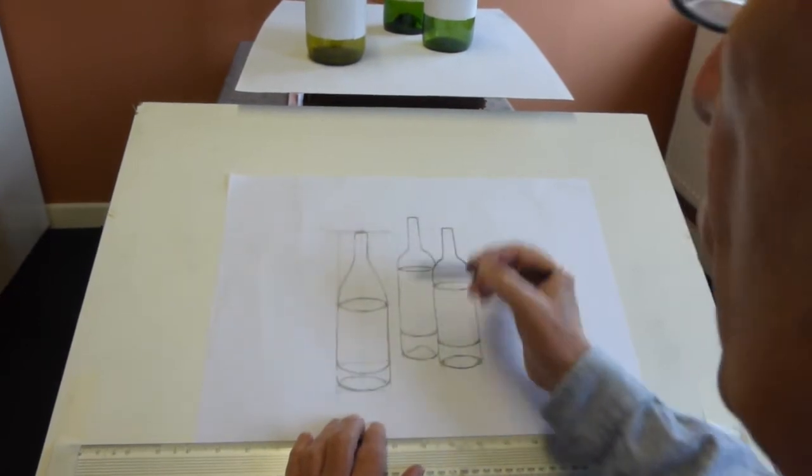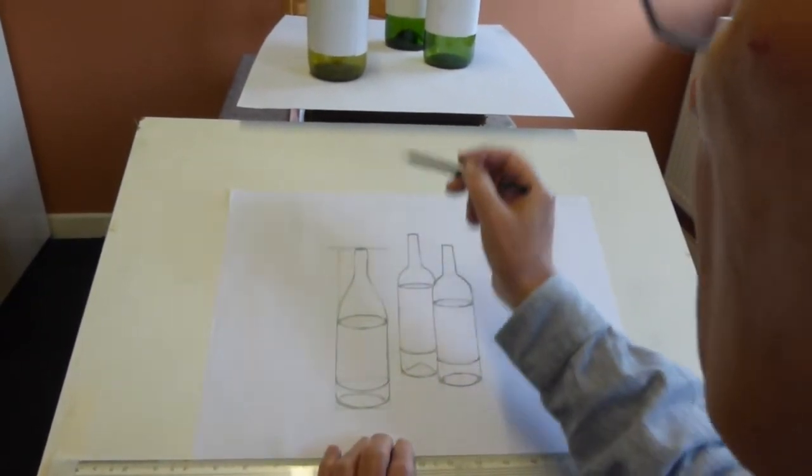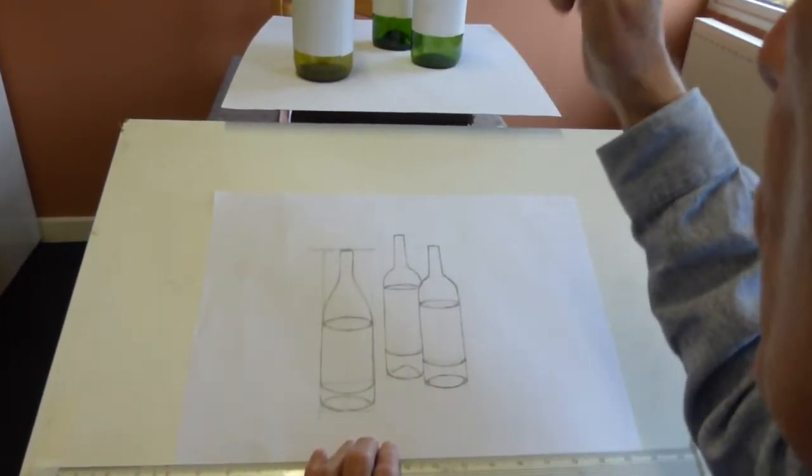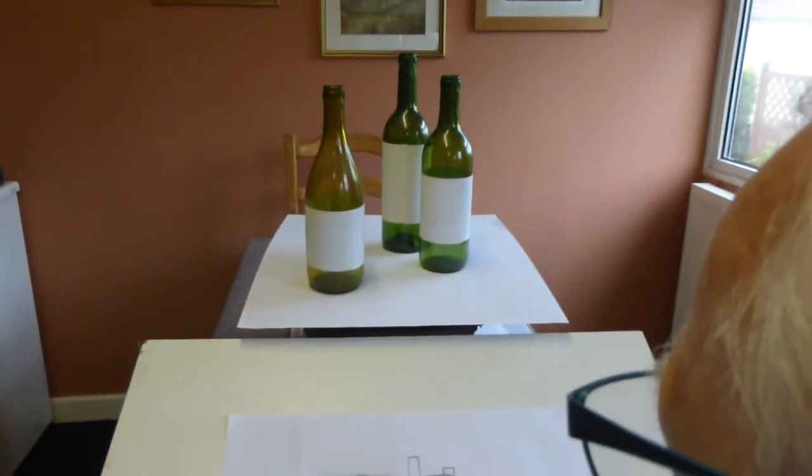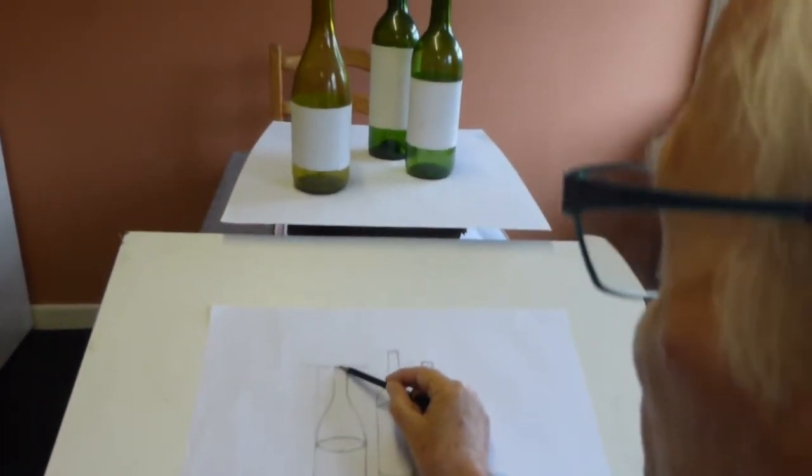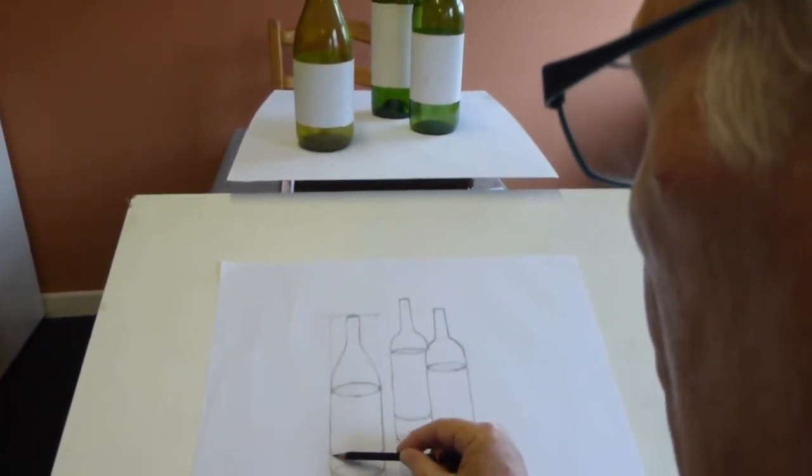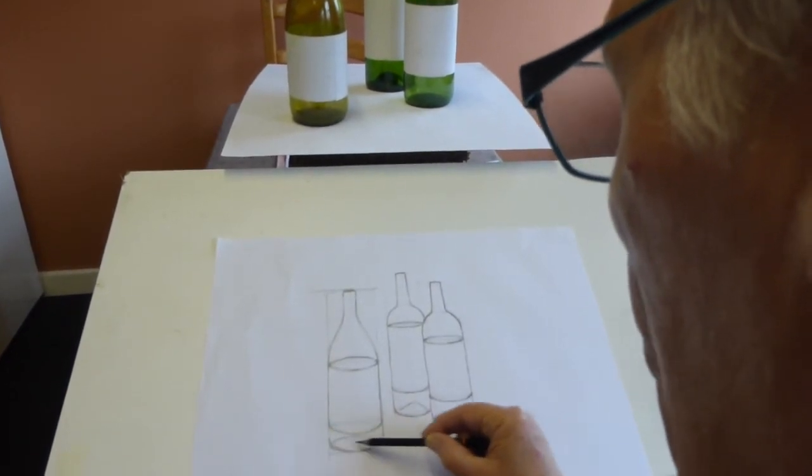Now then, the other thing that comes into this is perspective. Because here, I'm quite lower than the two bottles at the back compared to this one. This one, I can just see the top of it. This is fairly narrow, but I don't know if you can appreciate how much curvier that is, and the same at the bottom here as well.